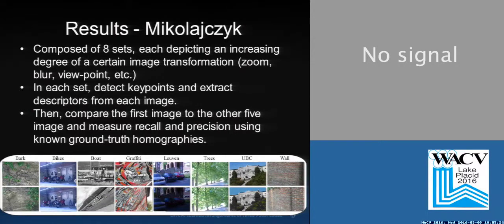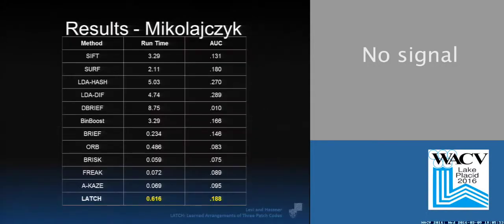Some quantitative results: we tested LATCH on two benchmarks. One is the Mikolajczyk benchmark, which is composed of eight image sets. Each image set contains six images, each depicting an increasing amount of a certain image transformation. The protocol states that you compare the first image in each of the eight sets to the other five, and measure precision and recall. LATCH performs better than SIFT and SERF, and better than other binary alternatives. It does lose out to LIOP, A-HASH, and DIFF, which are much slower.